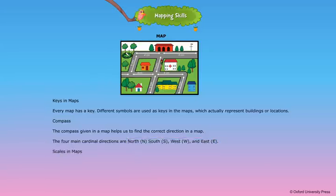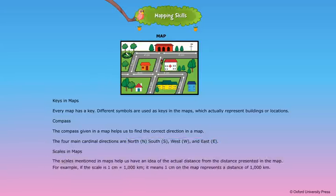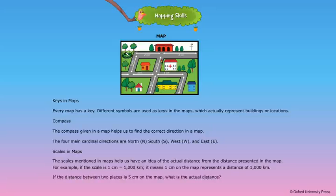Scales in maps. The scales mentioned in maps help us have an idea of the actual distance from the distance presented in the map. For example, if the scale is 1 cm equal to 1000 km, it means 1 cm on the map represents a distance of 1000 km. If the distance between two places is 5 cm on the map, what is the actual distance?